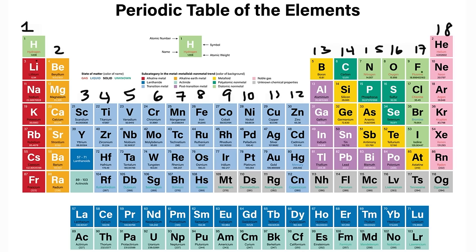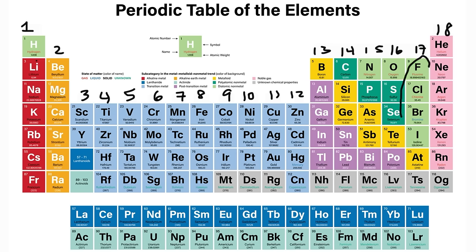The halogens include fluorine, chlorine, bromine, and iodine. The chalcogens include oxygen, sulfur, selenium, tellurium, and polonium.